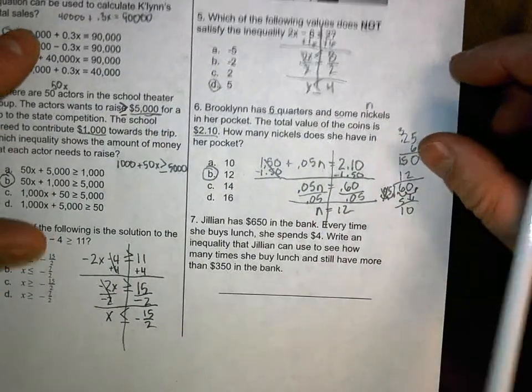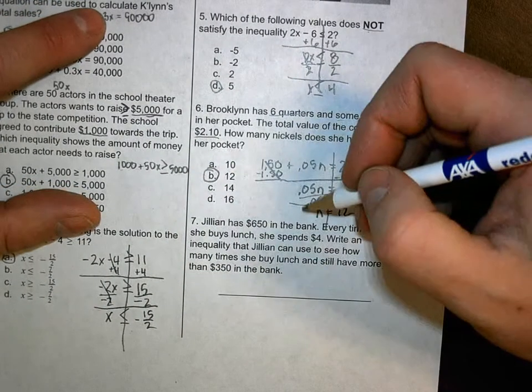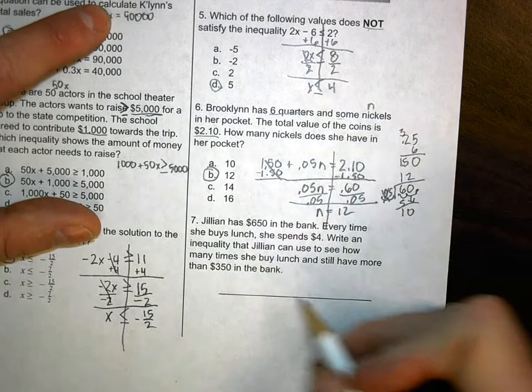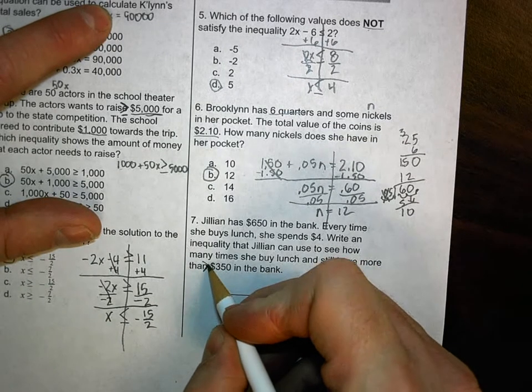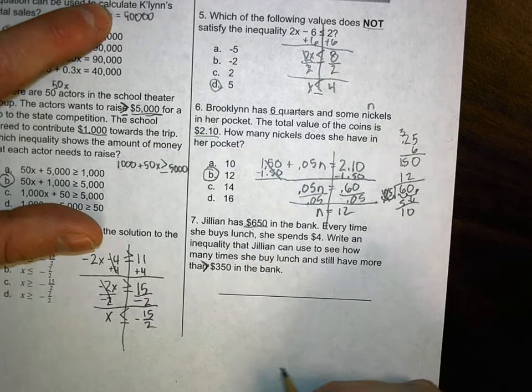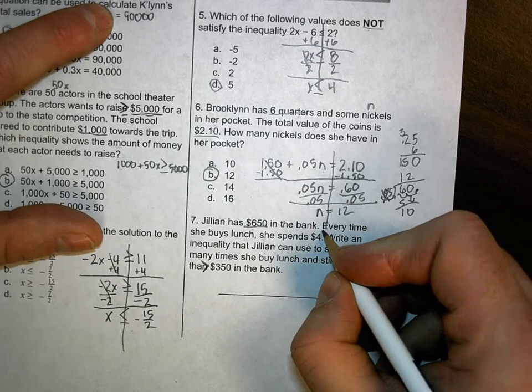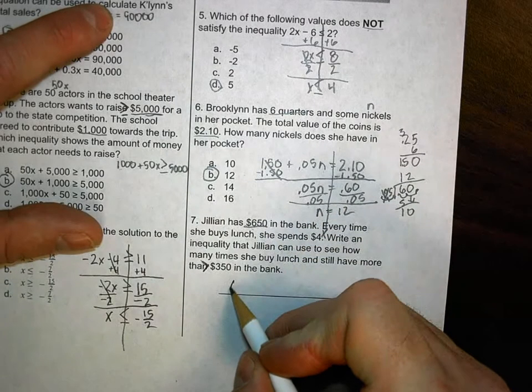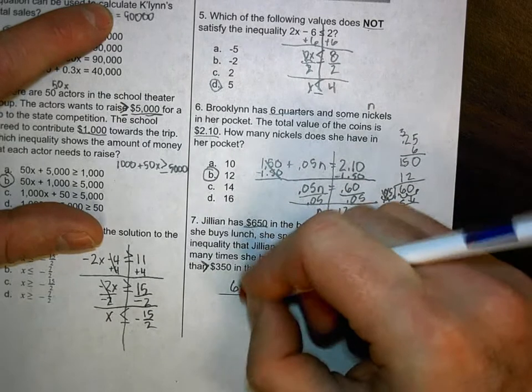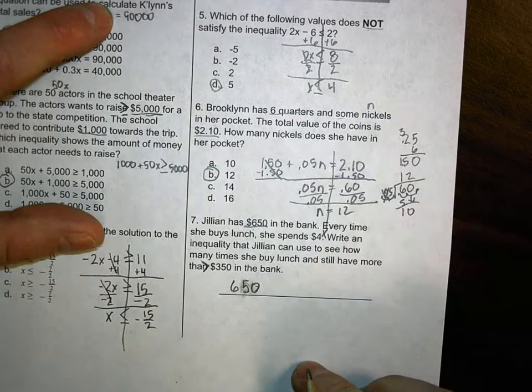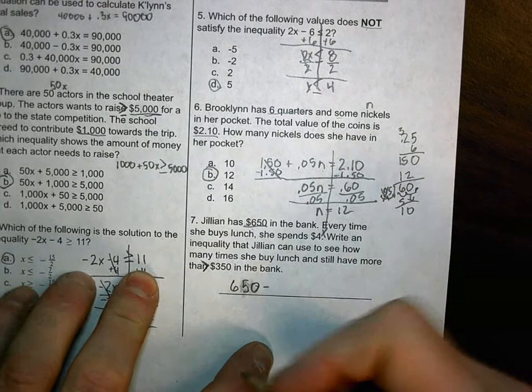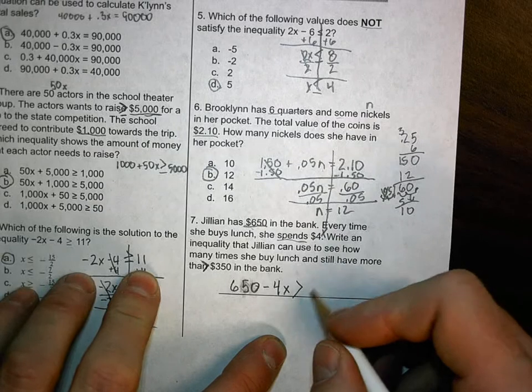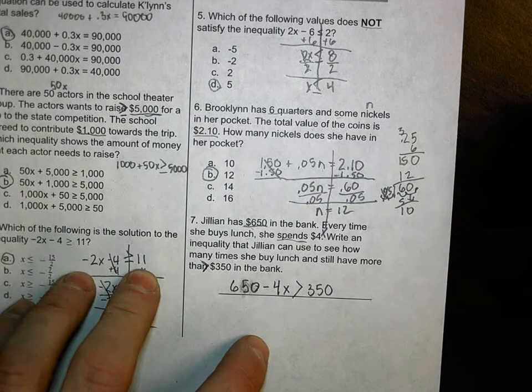Let's talk about Jillian's bank account. So Jillian has $650 in the bank. Every time she buys lunch, she spends $4. Write an inequality that Jillian can use to see how many times she can buy lunch and still have more than $350. So $350 has to be the minimum amount. She needs more than $350. She starts with $650. She buys lunch and spends $4. So $4 for every lunch. I'm going to use X. I thought about using L, but it so much looks like a 1, I'm going to leave it alone. So she starts out with $650. And she subtracts because she's spending money. She's spending $4. She subtracts 4 times lunch. And that, when she's done, it still has to equal more than $350. And there's my inequality.